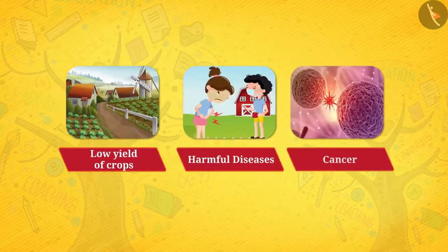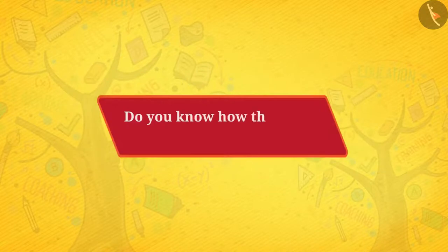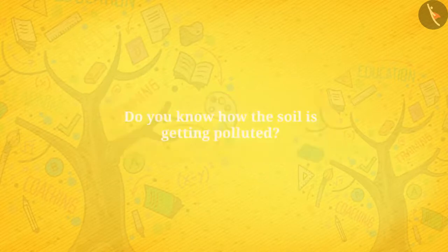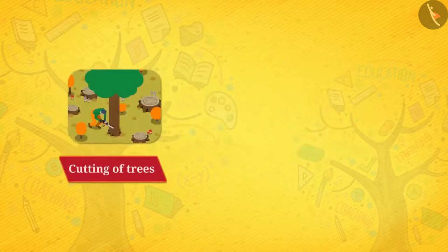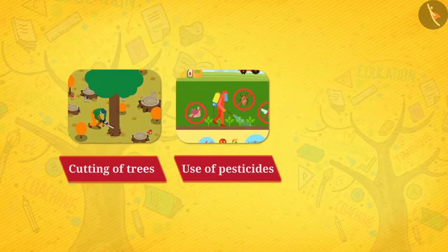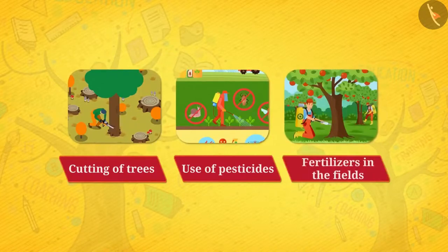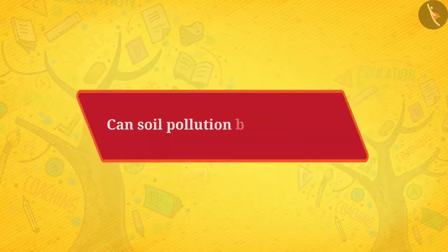But do you know how the soil is getting polluted? The main causes of land pollution are the cutting of trees and use of pesticides and fertilizers in the fields. Can soil pollution be prevented?